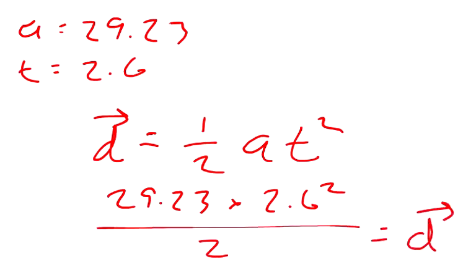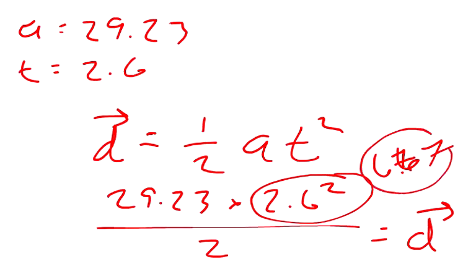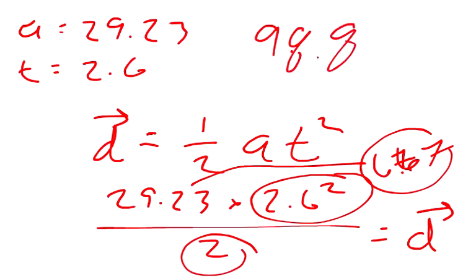2.6 squared is roughly 6 times 2.6, which is 6.67. And that times 29.23 divided by 2 equals 98.8. So 98.8 meters is the distance.